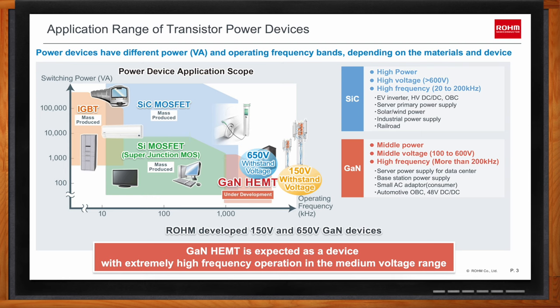Silicon super junction MOSFETs are often ideal for lower cost, high volume applications that do not have extreme performance requirements. Above silicon on the graph is silicon carbide. Like GaN, silicon carbide is being used much more often these days, with advantages in electrification for EVs, renewable energy, industrial power, and more. Silicon carbide supports both extremely high powers and relatively high switching frequencies.